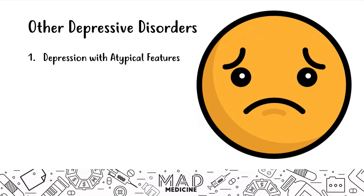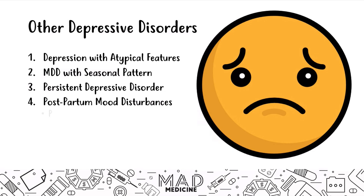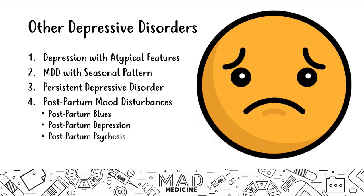There are four main depressive disorders you need to know: depression with atypical features, major depressive disorder with seasonal pattern, persistent depressive disorder, and postpartum mood disturbances. All of these are pretty important, and specifically within postpartum mood disturbances, there are three subtypes you should know.